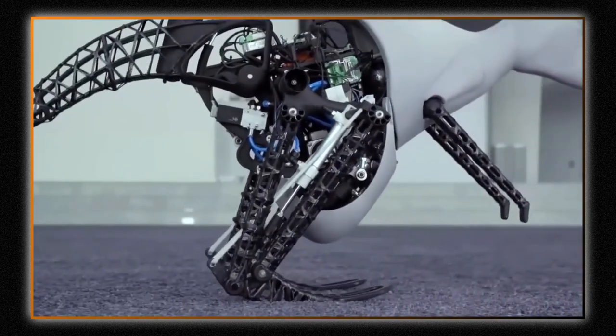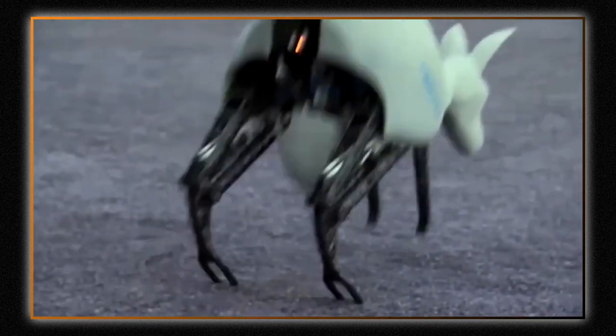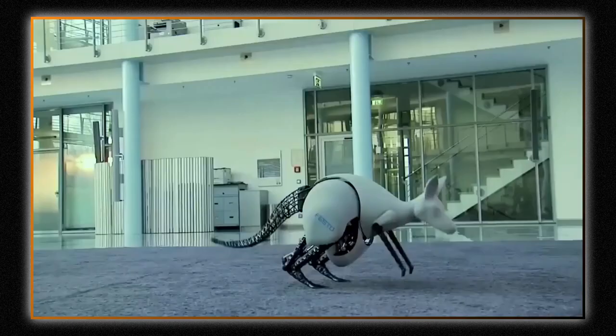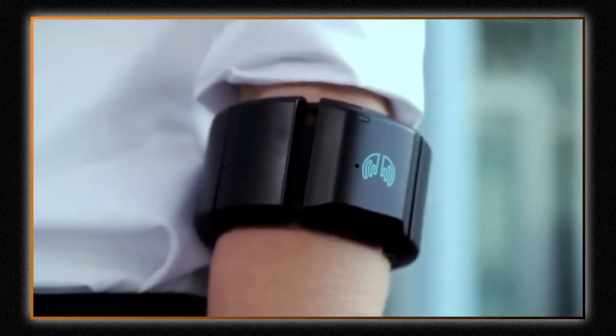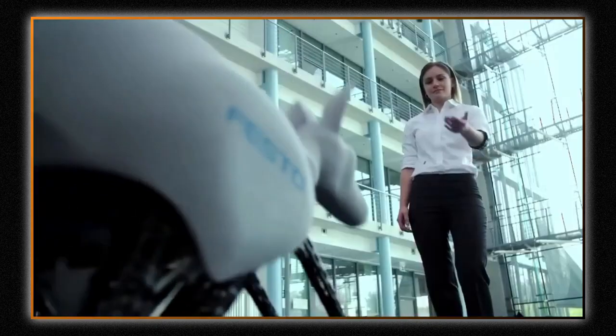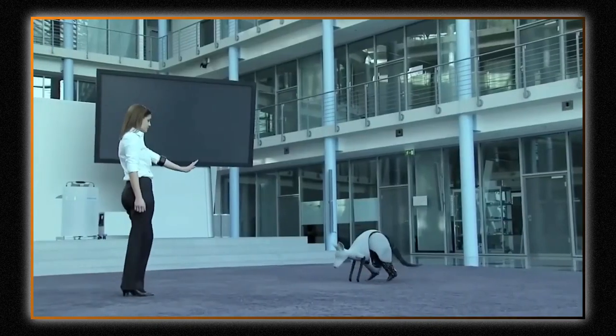A bionic kangaroo that measures one meter in height and weighs seven kilos is capable of doing a hop that is 80 centimeters in length and 40 centimeters in height. A pneumatic actuator is the power supply system that propels it forward. The robot is operated via a specialized bandage that is wrapped over a person's forearm and amplifies their myoelectric impulses.